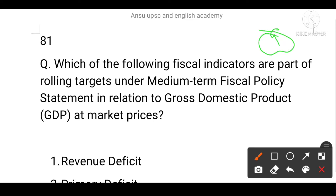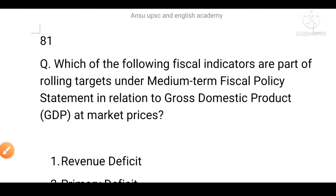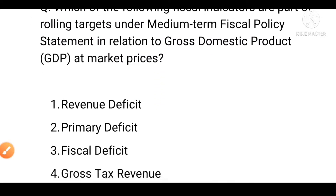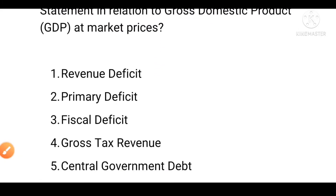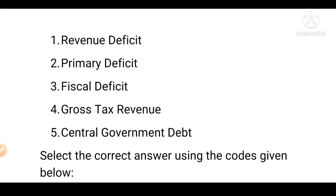Which of the following fiscal indicators are part of the rolling targets under the Medium Term Fiscal Policy Statement in relation to the GDP at market price? First is revenue deficit. Second is primary deficit. Third is fiscal deficit. Fourth is gross tax revenue. Fifth is central government debt.